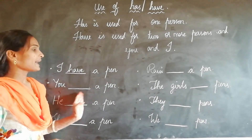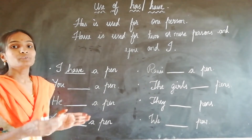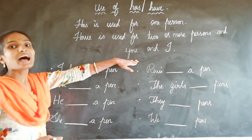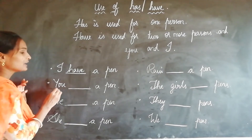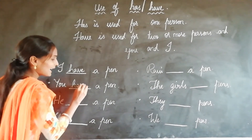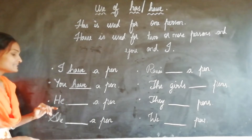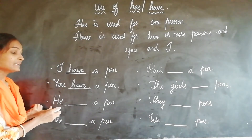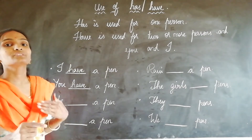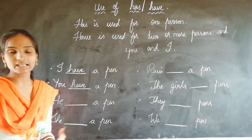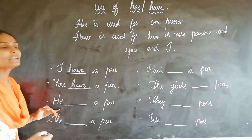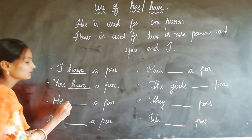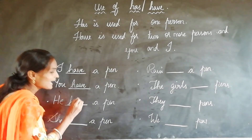Next: 'You dash a pen.' Here we should use have. You have a pen. Next: 'He dash a pen.' Here, 'he' is a pronoun for a single person, so he is about one person. He has a pen.